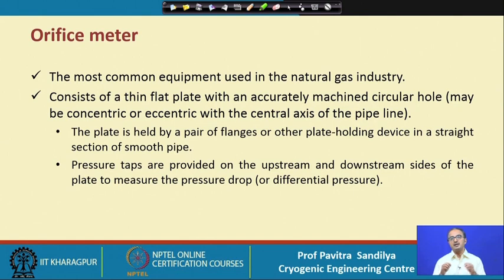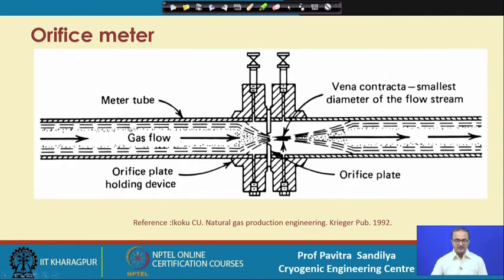Pressure taps are provided at designated locations upstream and downstream of the orifice meter, and all these pressure tap locations have been standardized. The gas flows through the pipeline and through the metering tube, held by a flanging arrangement. As the gas goes through the orifice, the flow converges. The edge of the orifice is not a sharp edge — it is what we call a bevel edge.